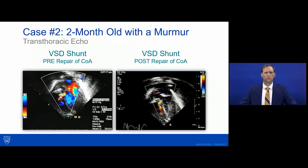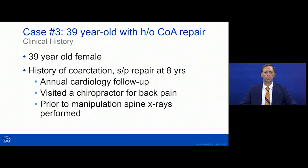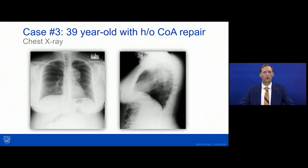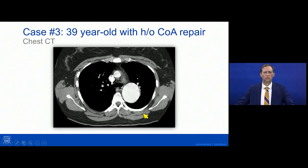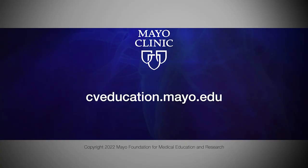Final case: a 39-year-old female who had coarctation repaired at age eight, with annual cardiology follow-ups, incidentally found on spine x-rays by a chiropractor. CT angiogram revealed a very large pseudoaneurysm at the site of her previous coarctation repair — she had undergone a Dacron graft patch repair, which is a significant risk factor for aneurysm formation. The take-home: even after repair, patients with coarctation need longitudinal follow-up for late complications, including non-echo advanced imaging periodically. Thank you.